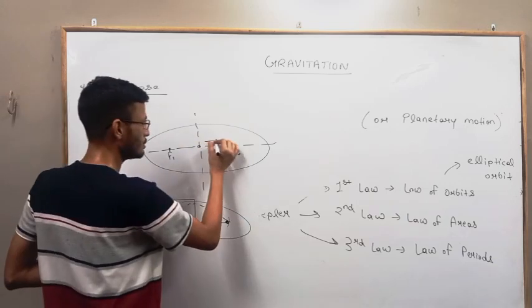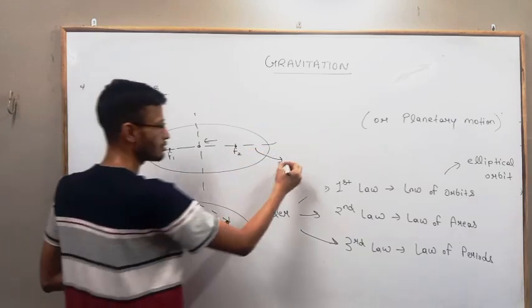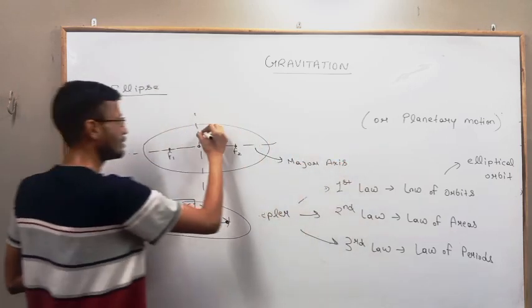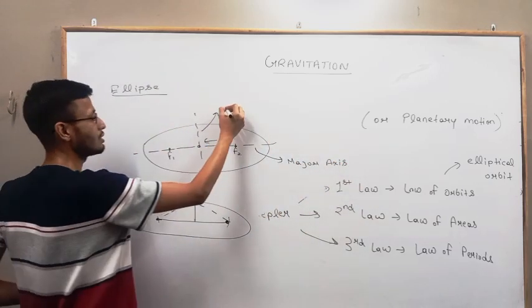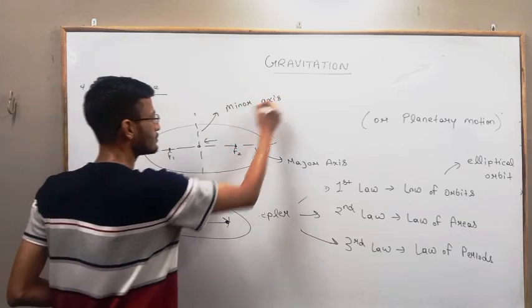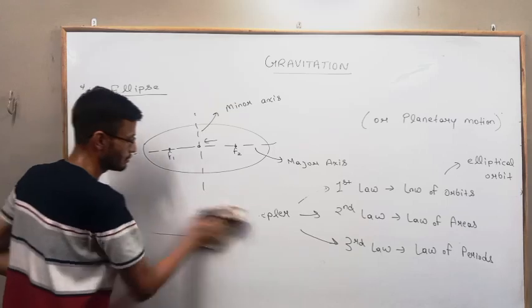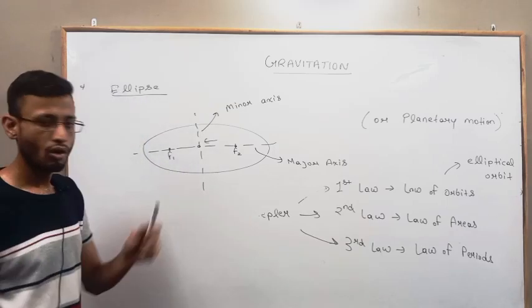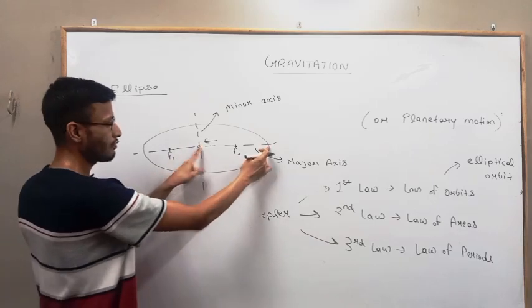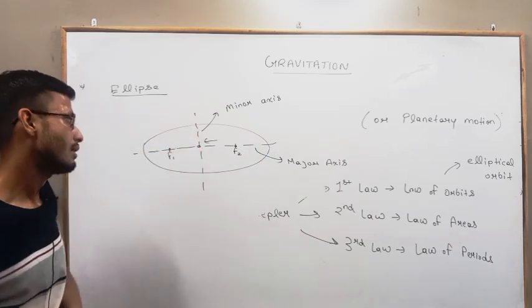Now this axis, the longer one, is known as the major axis, and this shorter one is known as the minor axis. We need only these two points: semi-major axis is half of the major axis, semi-minor axis is half of the minor axis.